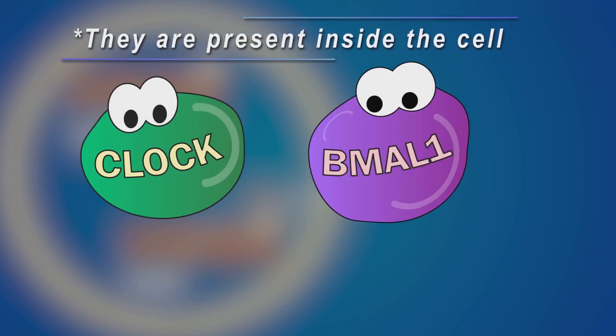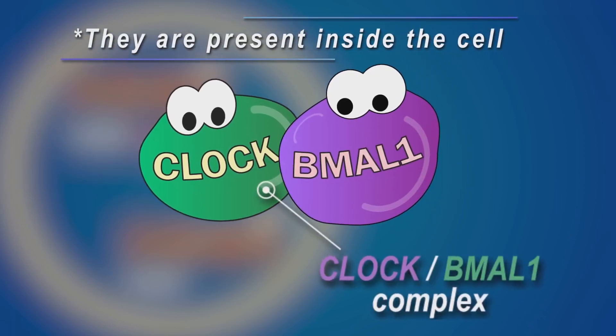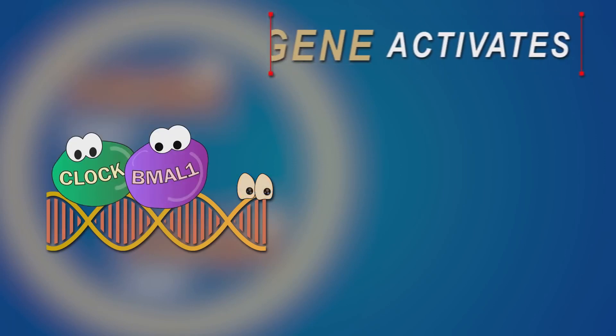Here's our first two proteins, clock and bmal1, who are tightly bound together forming a complex. When this complex is bound to the e-box, the gene becomes active and can make its own protein.